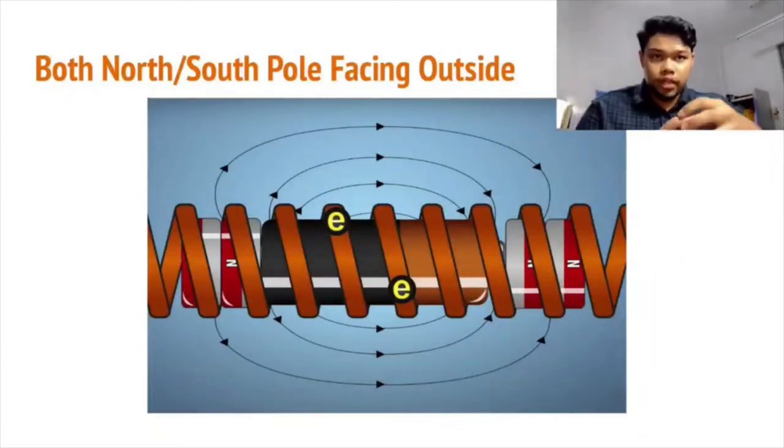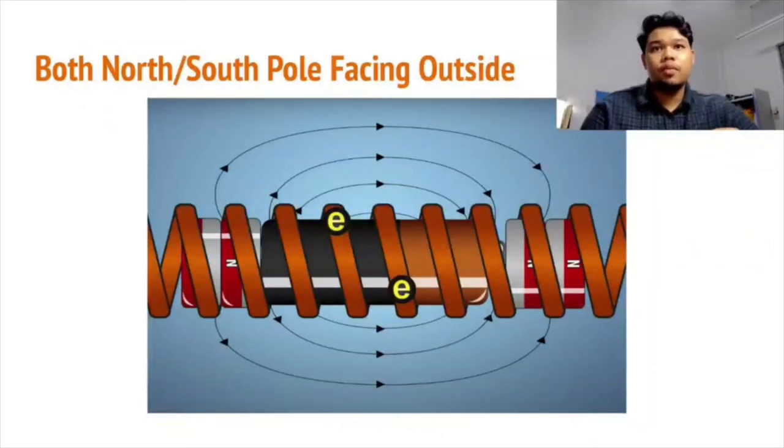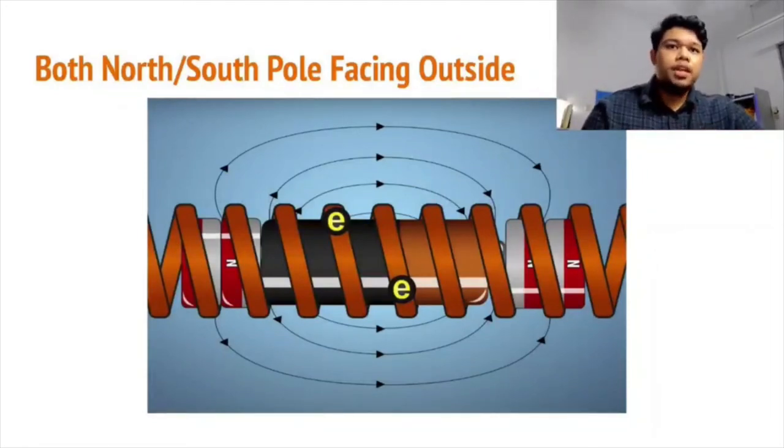When we change the configuration of the magnets, which is both the south pole facing outside from the batteries, we can observe that the battery will move from left to the right. This is because when we change the south pole, electric field will push the south pole of the magnets from left to the right side of the coil.